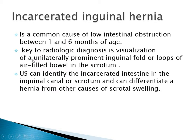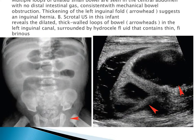Incarcerated inguinal hernia is a common cause of low intestinal obstruction between 1 and 6 months of age. The key to radiologic diagnosis is visualization of a unilaterally prominent inguinal fold or loops of air-filled bowel in the scrotum. Ultrasound can identify the incarcerated intestine in the inguinal canal or scrotum, and differentiate a hernia from other causes of scrotal swelling. Multiple small bowel loops are seen inside the scrotum with thick walls and surrounding fluid.